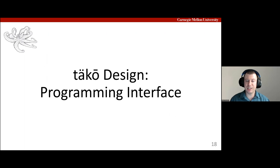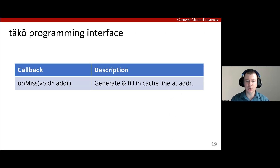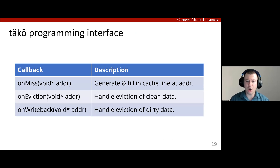Now that we've motivated the need for expanding the memory interface, let's see how TACO achieves this. TACO's two main components are the programming interface and the architecture. TACO's programming interface is currently designed for expert programmers and consists primarily of three callbacks: on-miss fills in a phantom cache line when it is first accessed, as we saw in the decompression example; on-eviction and on-writeback handle the eviction of clean and dirty data respectively.